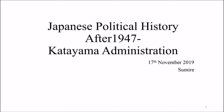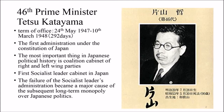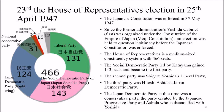Japanese political history after 1947. The 46th Prime Minister, Tetsu Katayama, served from 24th May 1947 to 10th May 1948. His was the first administration under the Constitution of Japan. The most important aspect in Japanese political history was his coalition cabinet of right and left wing parties — the first socialist leader cabinet in Japan. The failure of this socialist administration became a major cause of the subsequent long-term monopoly over Japanese politics.